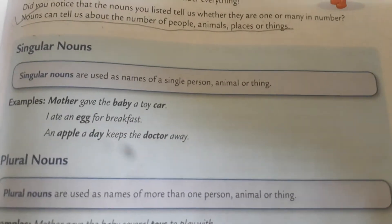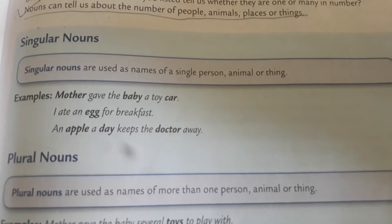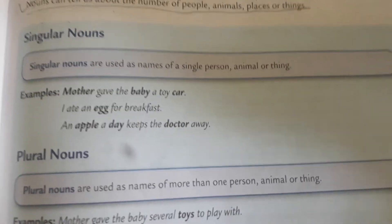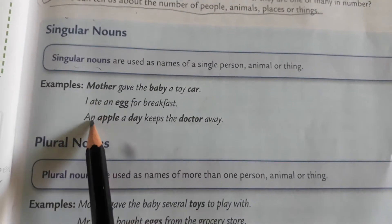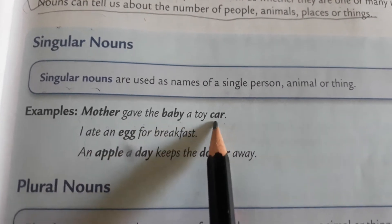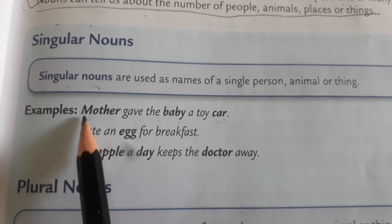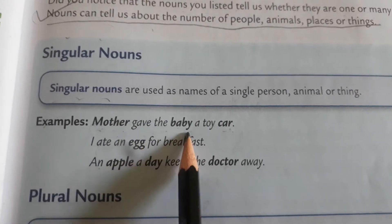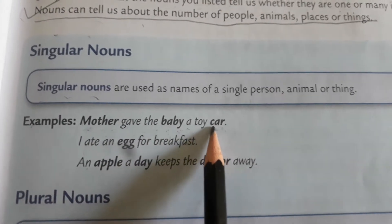Now come to singular nouns. Singular nouns are used as names of a single person, animal or thing. When we talk about one person, one animal and one thing, we call it singular nouns. For example: Mother gave the baby a toy car. Now here in this sentence, there are three nouns: Mother, baby, car. All three are written in bold letters. Mother is a singular noun, we are talking of one person. Baby, again a singular noun, only one person. Car, only one car.